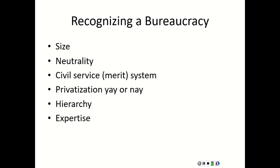Expertise. A bureaucracy has expertise — they understand how their decisions are going to affect clients, but also people outside the clientele interest group. They understand how decisions affect both bodies of the population.